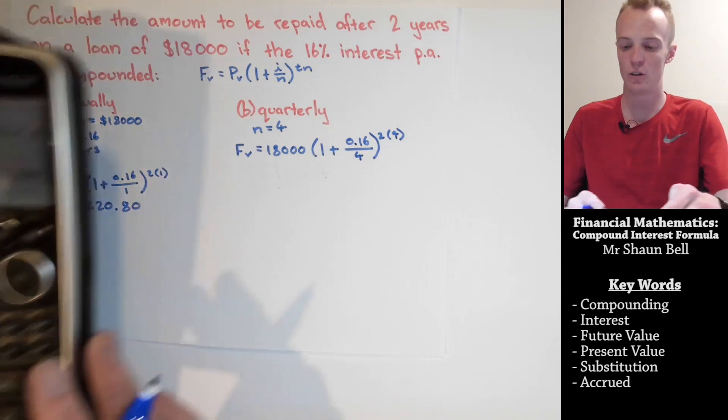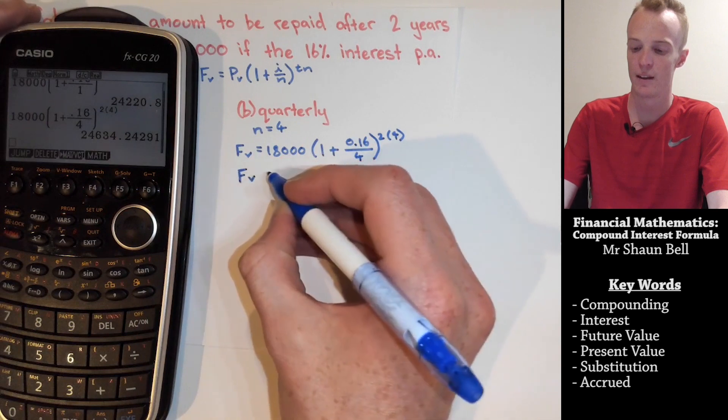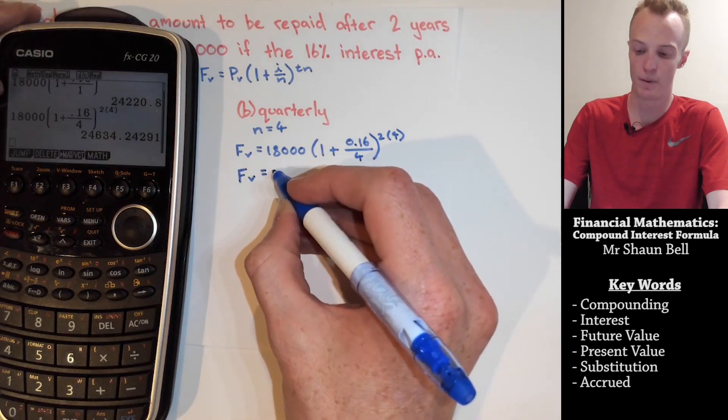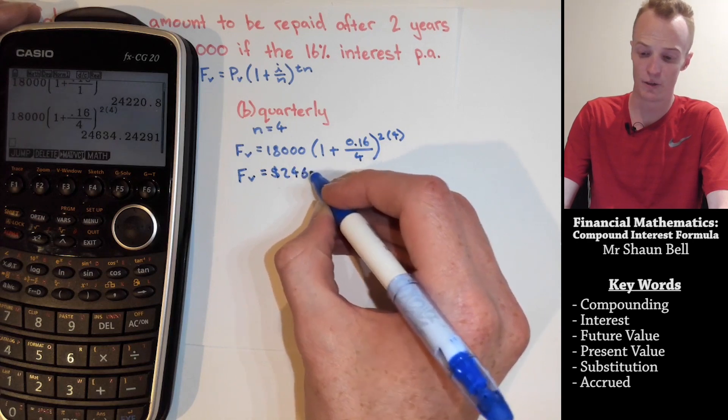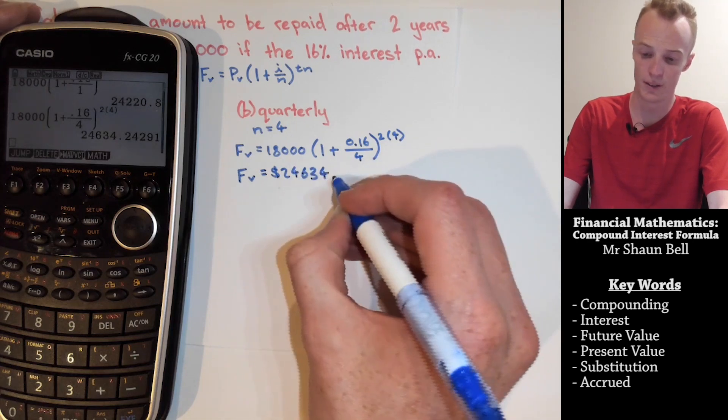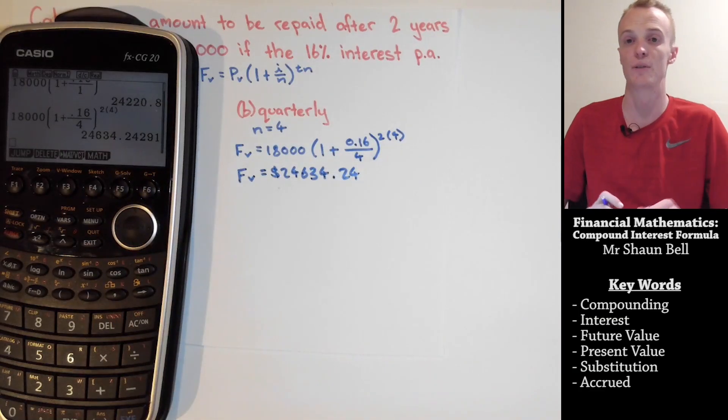Once again, you could simplify this down, or you could put it into the calculator like I have here, and the future value is going to be $24,634.24, rounded to 2 decimal places.